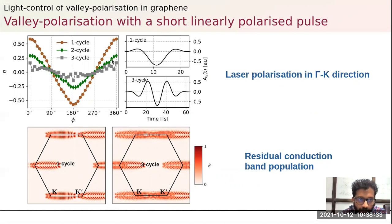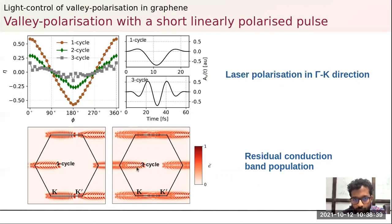However, when you go from a very short one-cycle pulse to a longer pulse, this mechanism of valley polarization fails.